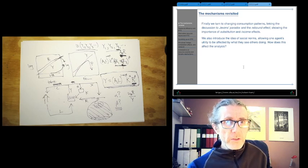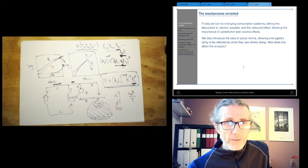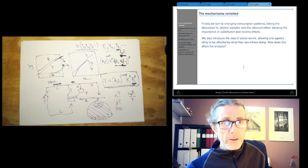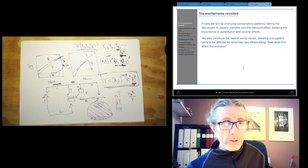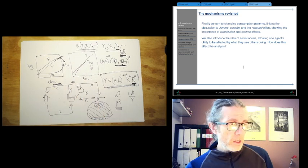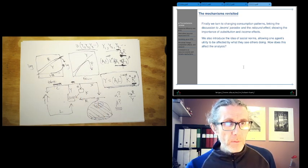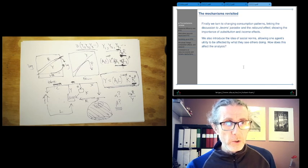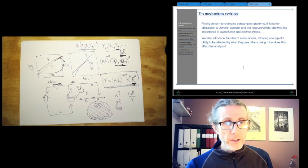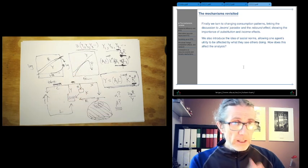Finally, we turn to changing consumption patterns and we link this to the discussion of something called Jevons paradox that you might have heard of and the rebound effect. And we talk about the importance of substitution and income effects in the utility function here. And we also introduced the idea of social norms, allowing one agent's utility to be affected by what they see others doing. And we talk about how that might affect the analysis.